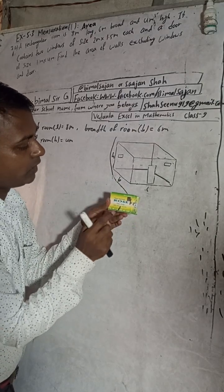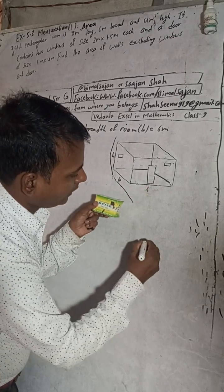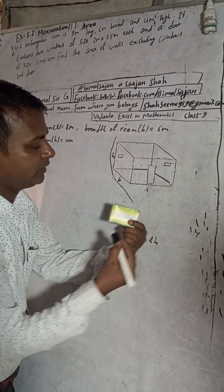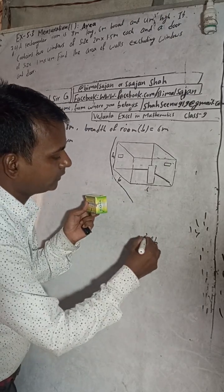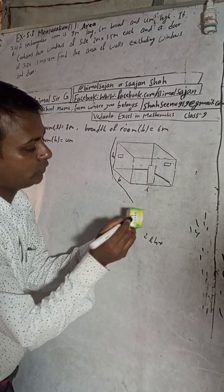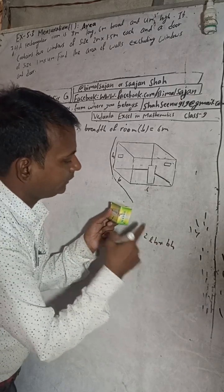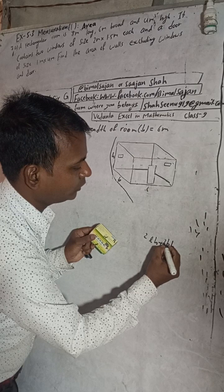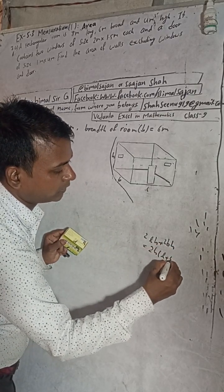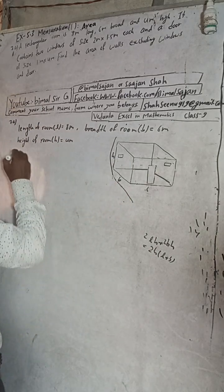This side wall and this side wall. This side wall is breadth into height, B into H. And this is the same, so there are two. If we take common here, two times there will be L plus B. So this is the formula for four walls, area of four walls.